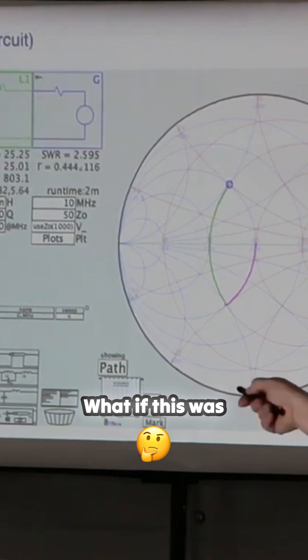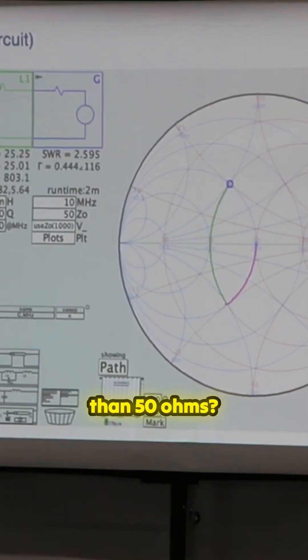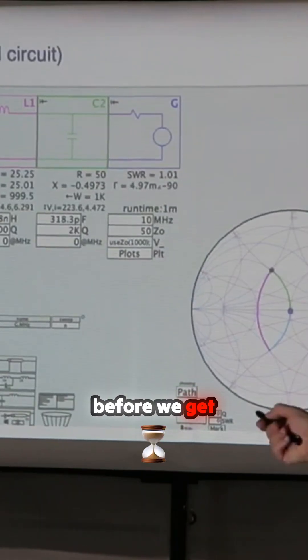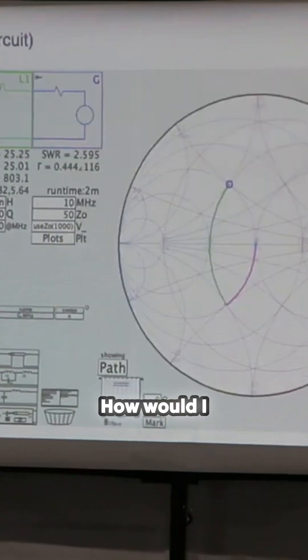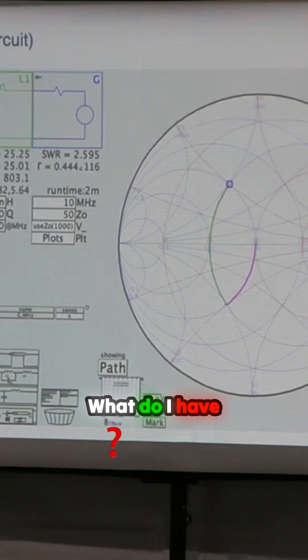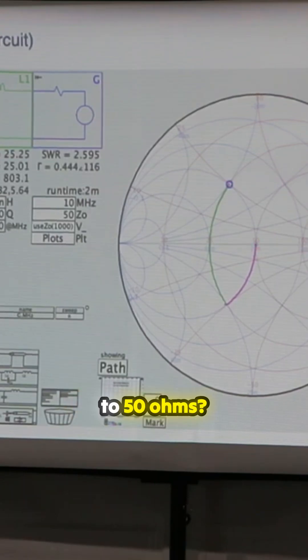What if this was something other than 50 ohms? Like this? Oh, actually, before we get there, how would I fix this? How would I resolve that? What do I have to do? What do I have to add to this lumped circuit to get the impedance back to 50 ohms?